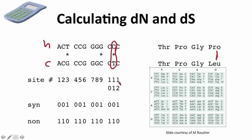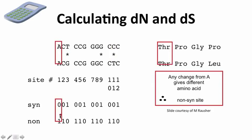We're going to walk through site by site across all 12 nucleotide sites. We want to classify each site as one that could potentially cause a non-synonymous difference or a synonymous difference. Starting with ACT — if we change that first base to CCT, TCT, or GCT, it would change the amino acid: TCT is serine, CCT is proline, GCT is alanine. So we classify this first site as a non-synonymous site because any change from A gives a different amino acid.